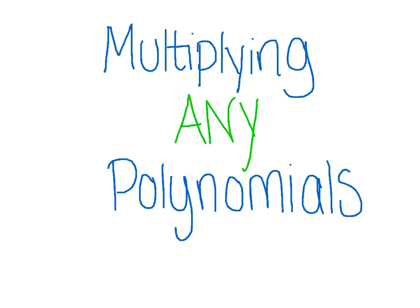Previously, we've learned to multiply polynomials using the distributive property, the box method, and the FOIL method. However, we really only worked on multiplying two binomials together.